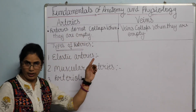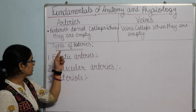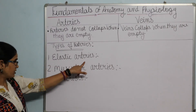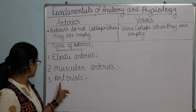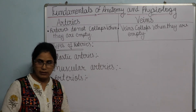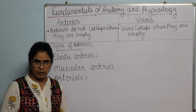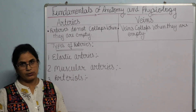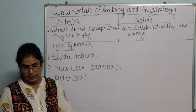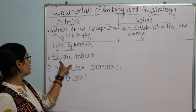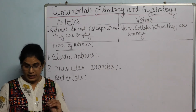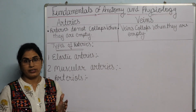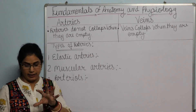Our arteries and veins points are completed. Now we come to the types of arteries. The first type is elastic arteries, the second is muscular arteries, and the third is arterioles. The written material is already given in the book and I will also send notes in your WhatsApp group. Elastic arteries are called conducting arteries because of the large amount of work they do.